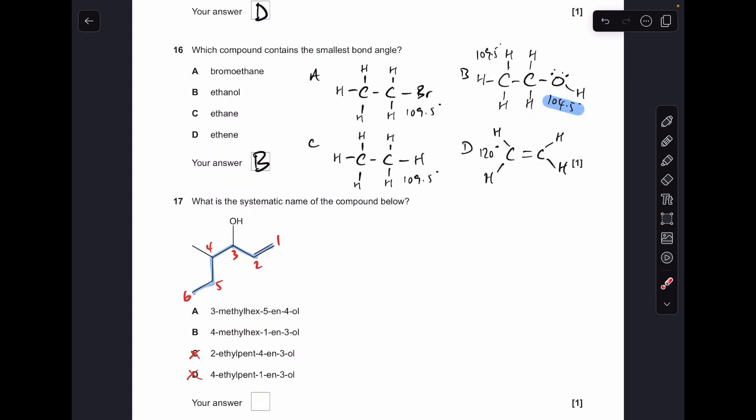Number seventeen: the longest continuous carbon chain is six long, so this is a hex, so that means C and D are out. And then the functional groups: the lowest numbers you can get for the functional groups are one and three, so B is the answer.